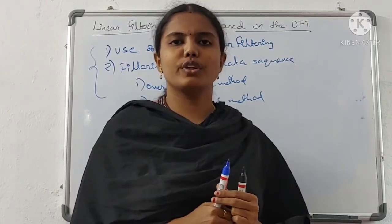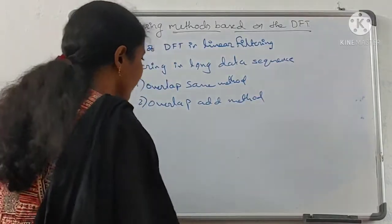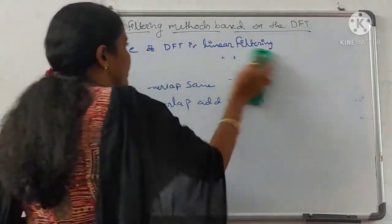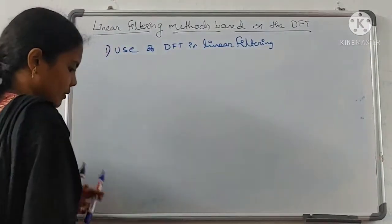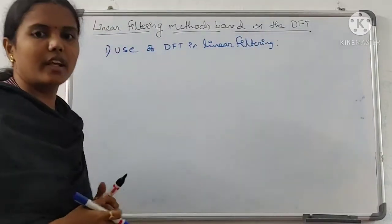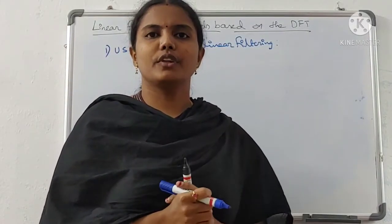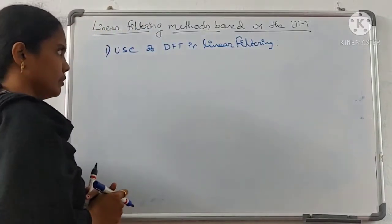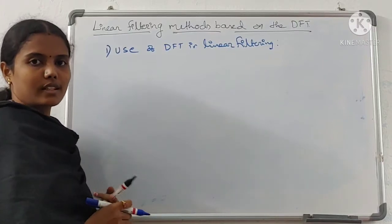First, we have to see about the use of DFT in linear filtering. In this linear filtering, we have two types: one is linear convolution and the second one is circular convolution.